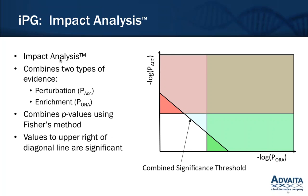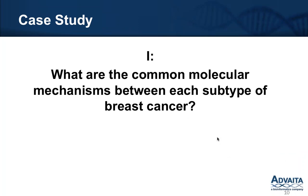Briefly, I will go over the approach and methodology used in iPathway Guide to score and rank pathways. We use a unique method called impact analysis, which combines two types of evidence: perturbation and enrichment. Perturbation is a form of pathway topology — this was covered in the first webinar. In the pathways view, you will see a graph with perturbation on the y-axis and enrichment on the x-axis, and anything above the diagonal line is considered significant. Using two types of evidence instead of one greatly minimizes false positives in gene expression analysis.